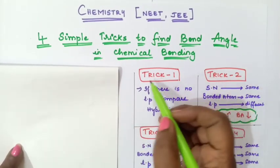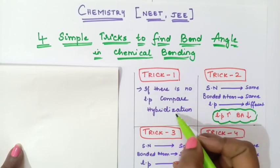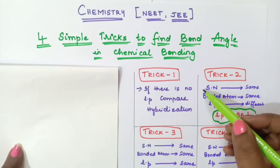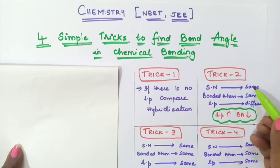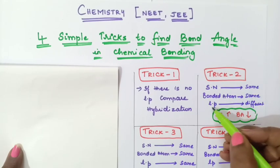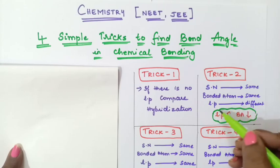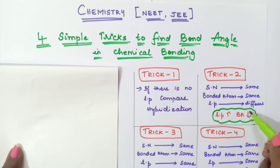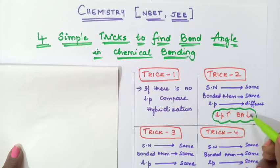Trick number one: if there is no lone pair, then compare hybridization. Trick number two: check the steric number and bonded atoms — if both are the same but lone pair is different, apply this formula: more lone pairs means bond angle will decrease. So in a molecule if more lone pairs are present, the bond angle is going to decrease.